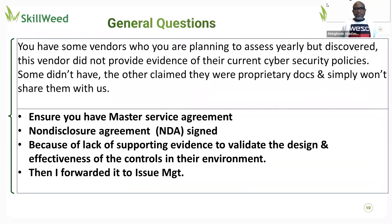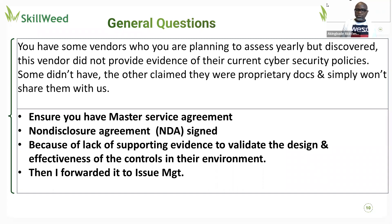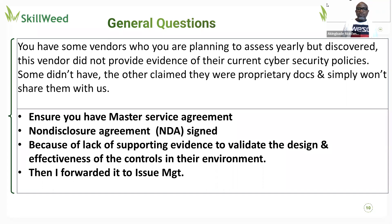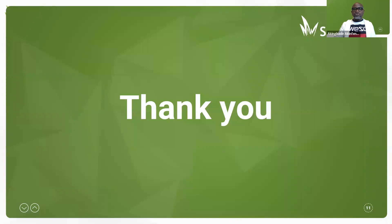A real-life interview question that was asked: what would you do if a vendor you're assessing refuses to provide documentation? First, give them the benefit of the doubt — maybe the contact isn't available. Check if they have a backup or a manager you can reach. Key things to note: ensure you have a Master Service Agreement and Non-Disclosure Agreement in place, validate the effectiveness of their controls by asking for their SOC 2 report, and escalate to the vendor's issue management team if necessary. That gives a summary of everything covered specifically in this cheat sheet.